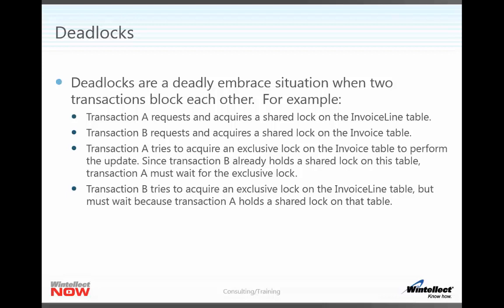Which brings us to deadlocks. Deadlocks are a nasty problem — a situation where we have a deadly embrace between two transactions that are actually blocking each other. As an example, let's say transaction A requests and acquires a shared lock on our invoice line table, and then transaction B requests and acquires a shared lock on the invoice table. Transaction A then tries to acquire an exclusive lock on the invoice table when it wants to perform an update, but transaction B already holds a shared lock on that table, so transaction A has to wait. Now if transaction B tries to acquire an exclusive lock on the invoice line table, it's going to be a problem because it has to wait on transaction A, which holds a shared lock on that table.